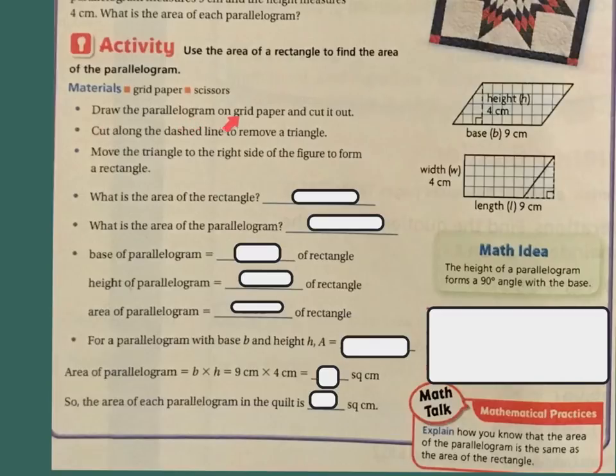If you draw a parallelogram on grid paper and cut it out, so here's my parallelogram, and then I'd cut right here to remove this triangle and then place this triangle on the other side, it's essentially a rectangle.